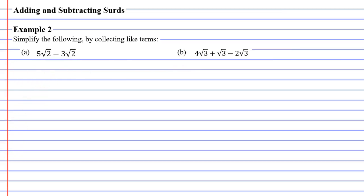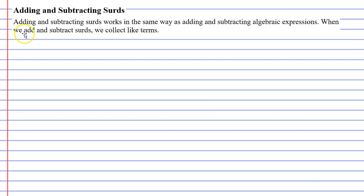Before we get into the example, we're going to have a little discussion. When you add and subtract surds, it works in the same way as when you add and subtract algebraic expressions. For example, if I take 2x and add it to 3x, this expression will simplify to 5x. We call this collecting like terms. What makes the 2x and the 3x like terms? It's because they share the same pronumeral, x. When this happens, we can simply add the coefficients: 2 plus 3 is 5, and the pronumeral remains as x.